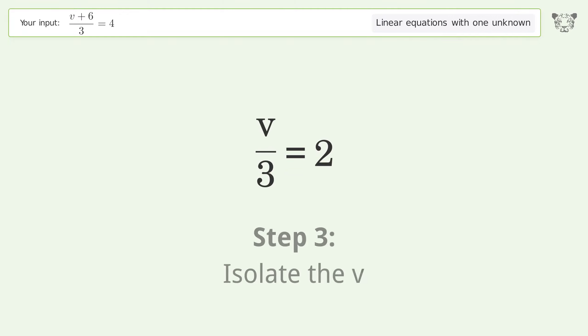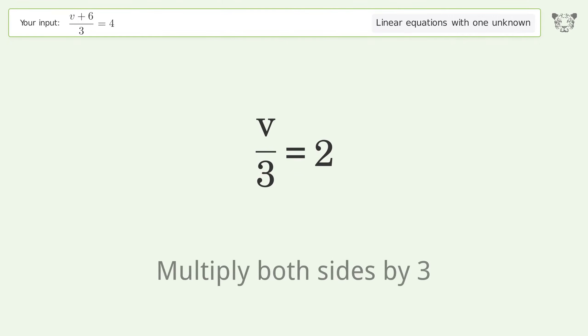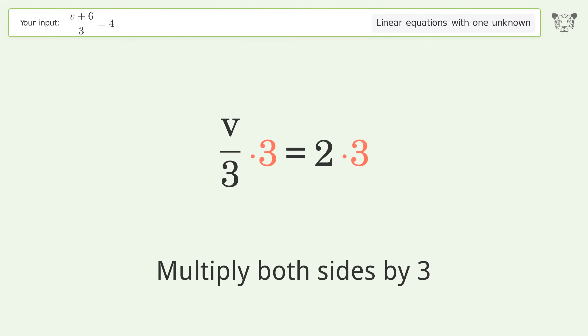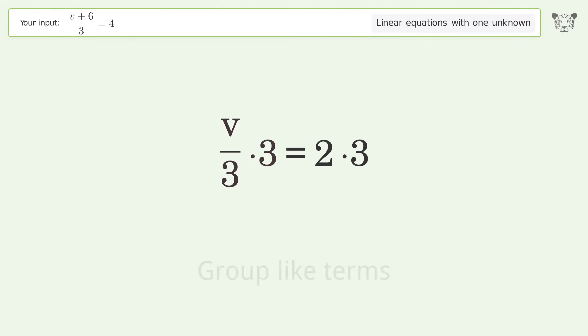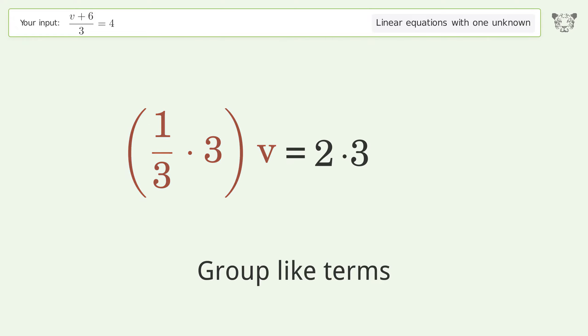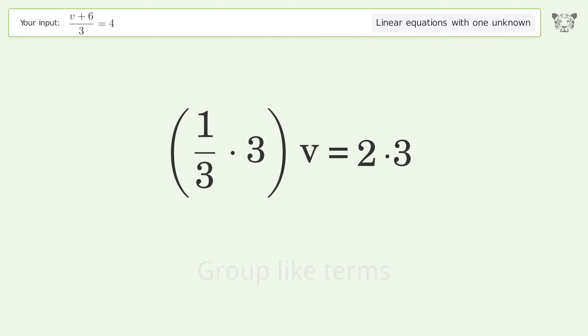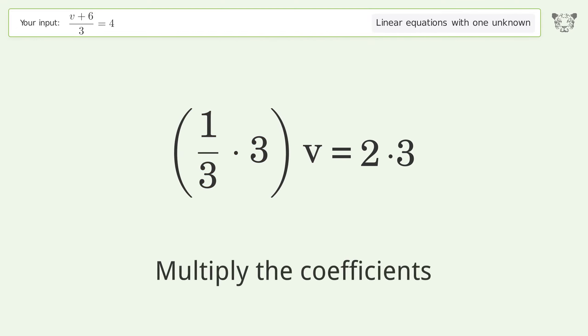Isolate v by multiplying both sides by 3. Group like terms, then multiply the coefficients.